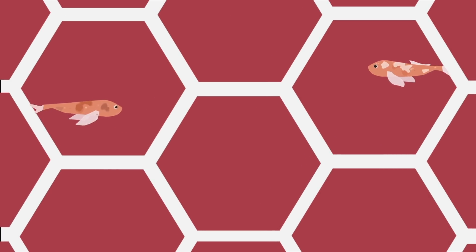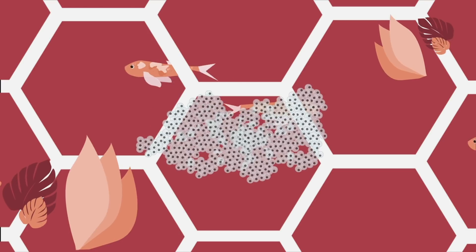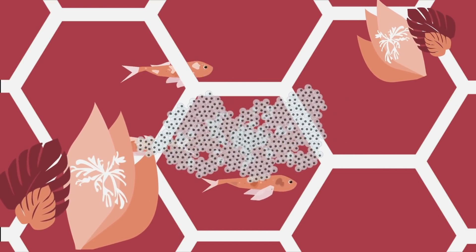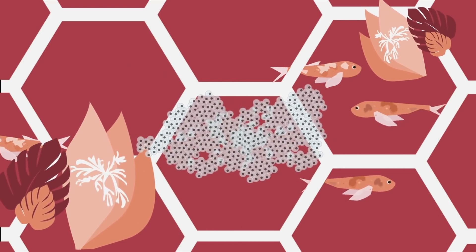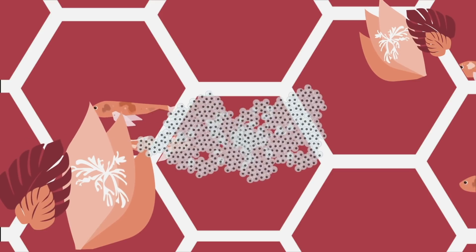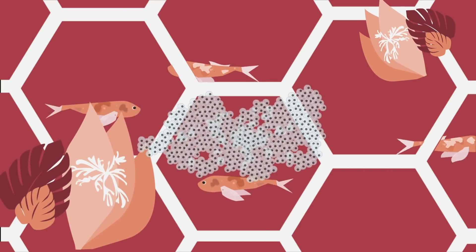For example, many pond owners introduced fish, frog spawn or aquatic plants, which may be carrying ranaviruses into the pond environment without realising they were spreading the infection.